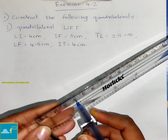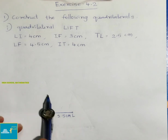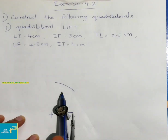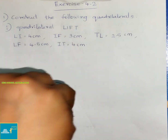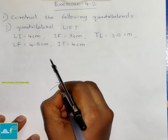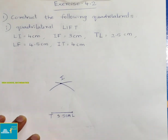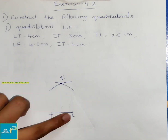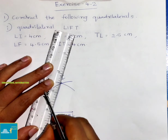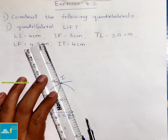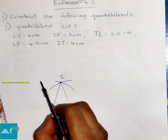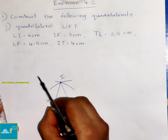Let us take 4 cm. With T as center, draw the arc. Both arcs meet at point I. Now join IT and LI.